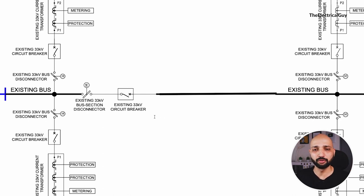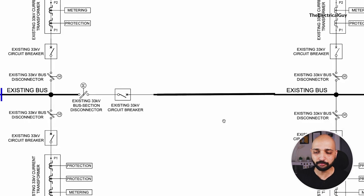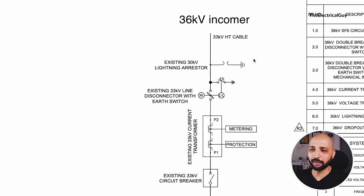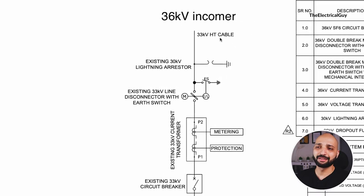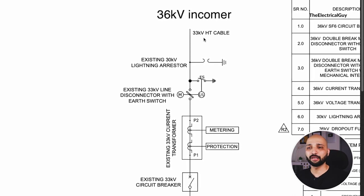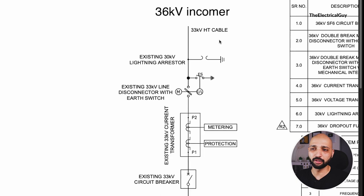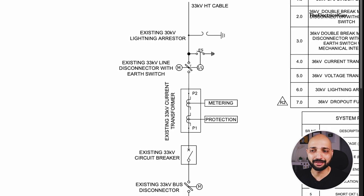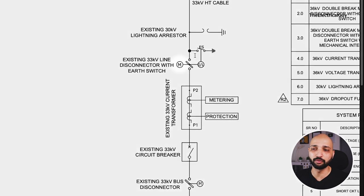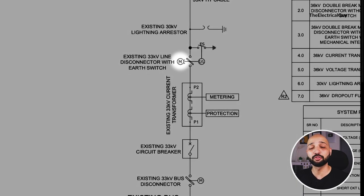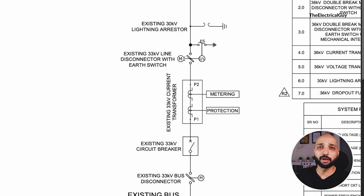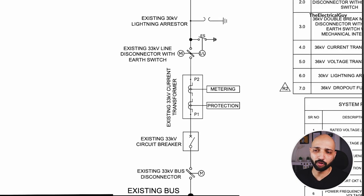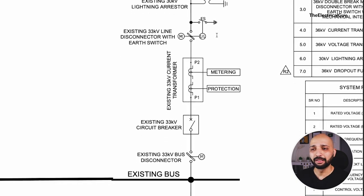Let us focus on the bay visible here and go through the apparatus and equipment connected. This is a 36 kV incomer and the incoming line is a 33 kV high tension cable. That cable is connected initially to a lightning arrester. Then we have a motorized double brake type disconnector with one earthing switch — 'M' is mentioned to indicate it is motor operated. Motor-operated disconnectors are more advantageous than manual operation. This is the double brake isolator with a single earth switch.